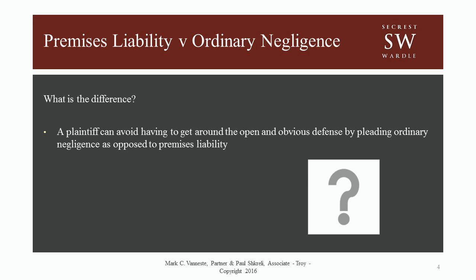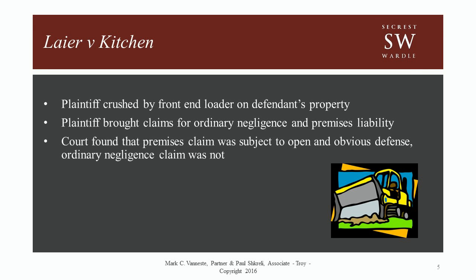Again, in considering the difference between the two: in the world of premises liability, the plaintiff will sometimes seek to plead his or her claim as one of general negligence instead of strictly premises liability. Typically, the primary motivation for this is to avoid the open and obvious doctrine. This is a defense that has been the subject of many court opinions resulting in the dismissal of premises cases. A seminal case in this area is Lair v. Kitchen, a 2005 case.